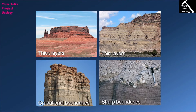Boundaries between beds occur in two ways: gradational boundaries and sharp boundaries. In the case of a sharp boundary, the contact between beds is crisp and very clear to see. As we cross from one bed to another, the change is typically marked by at least one of three variables: a change in colour, a change in composition, or a change in grain size.